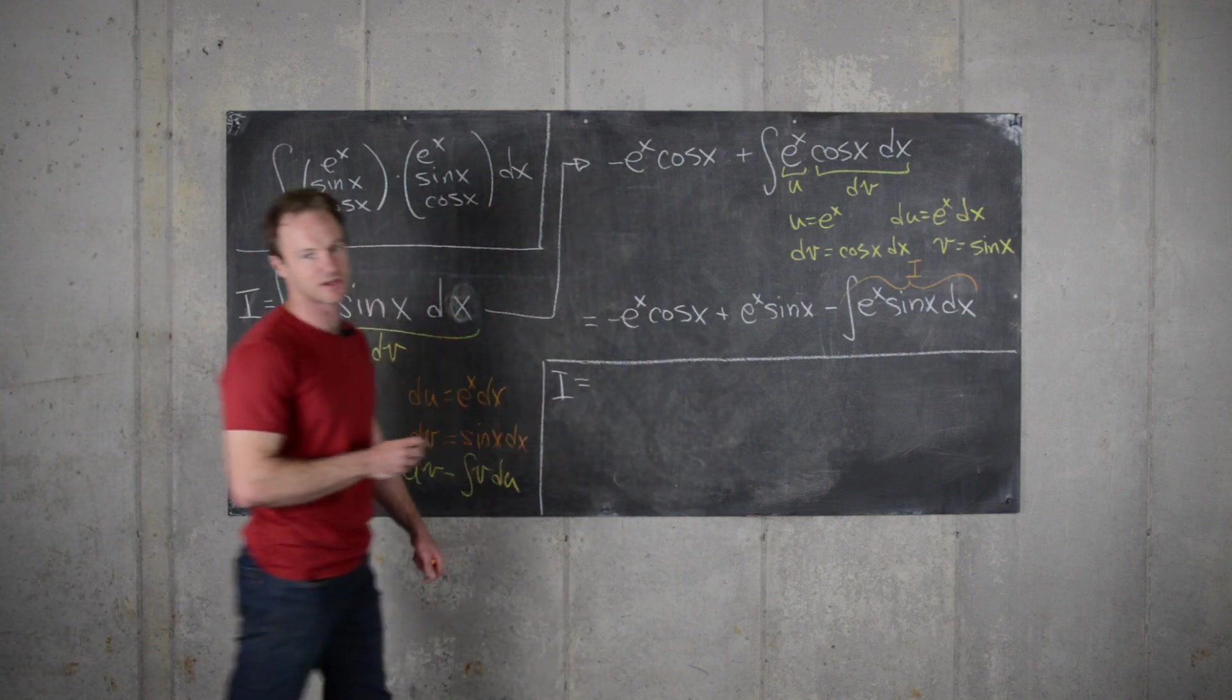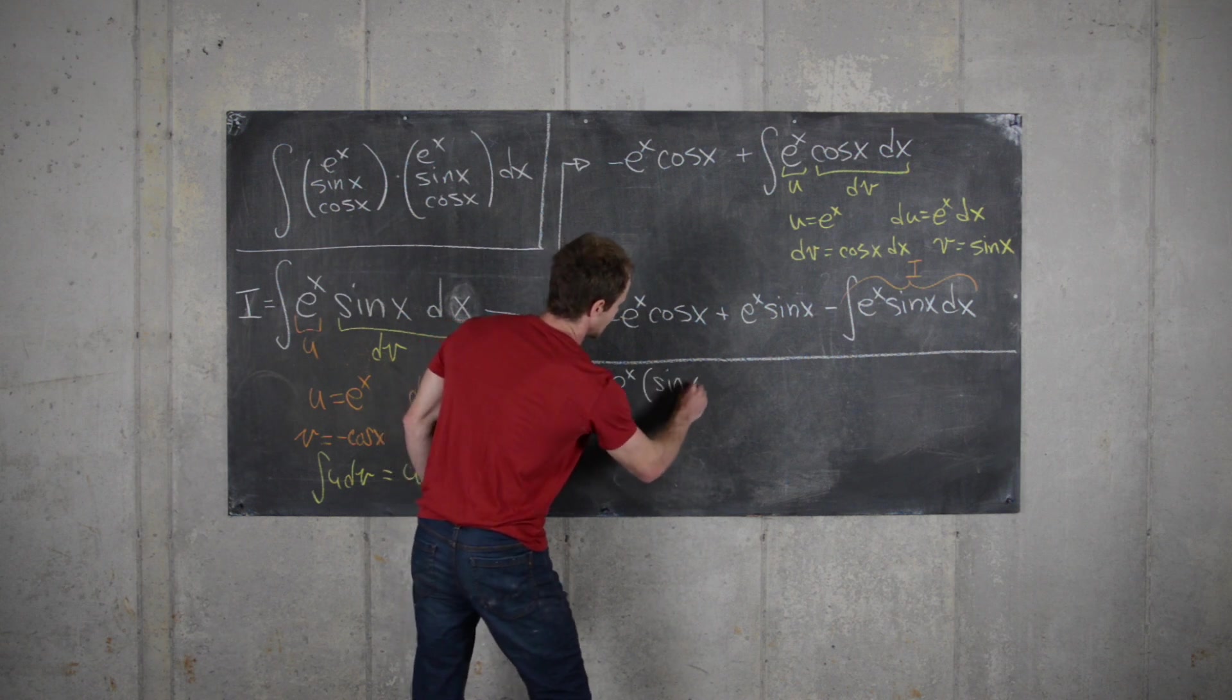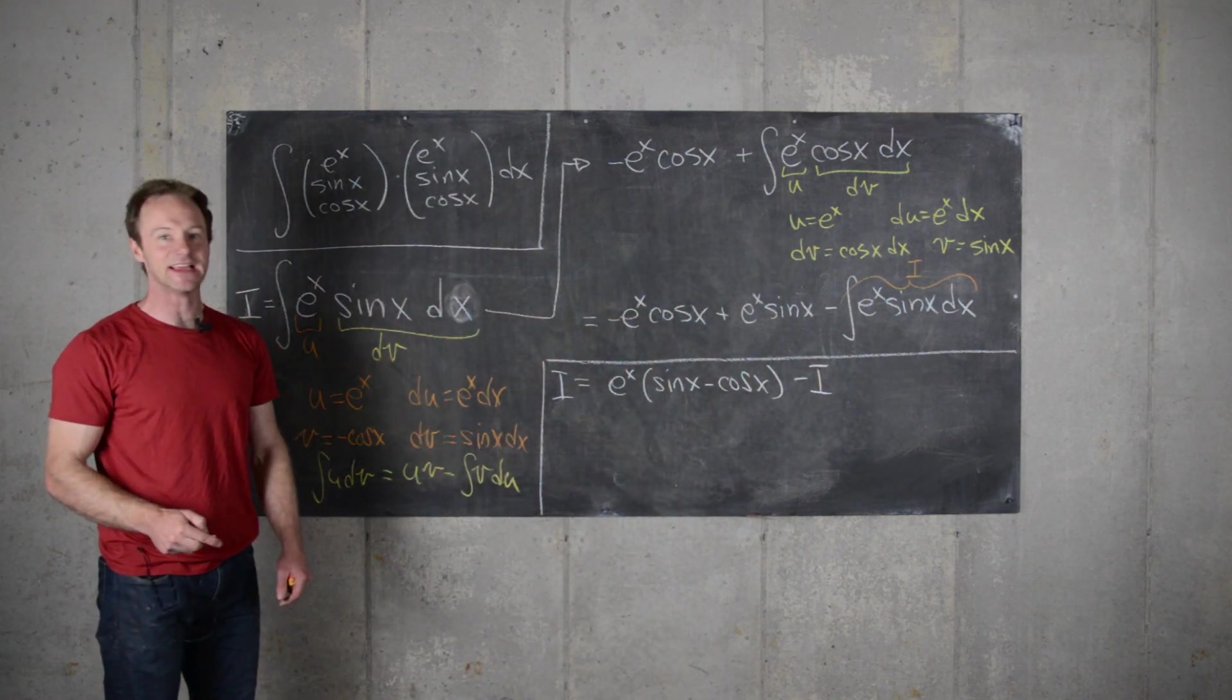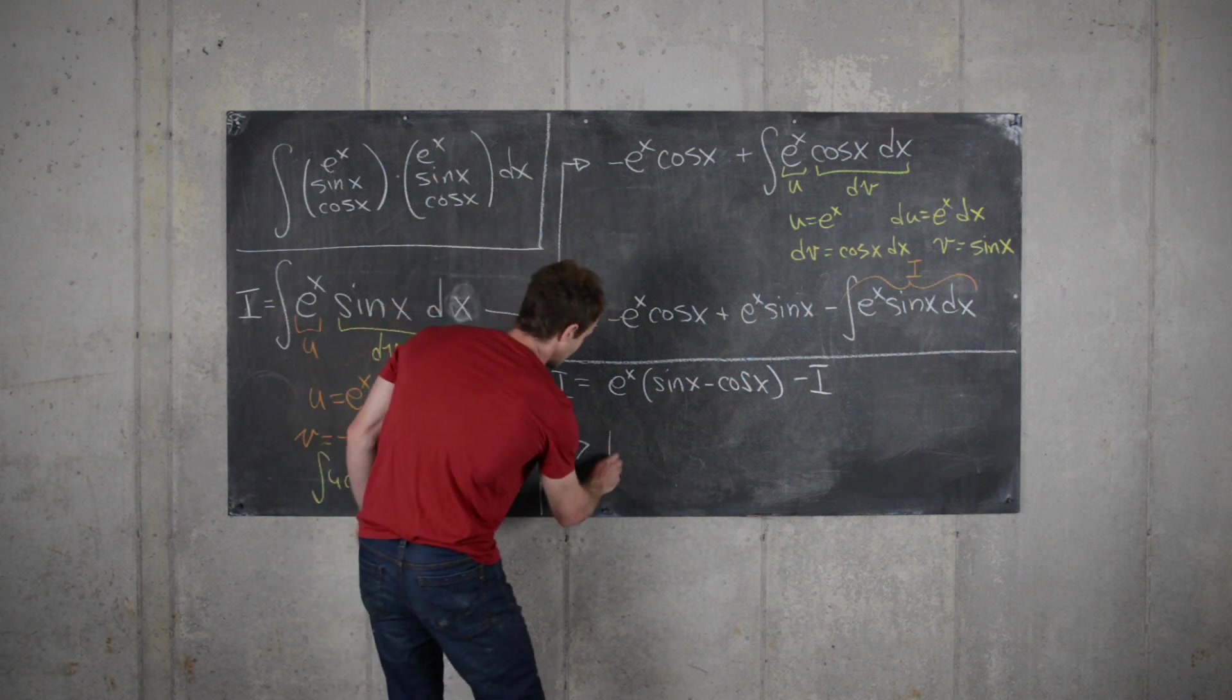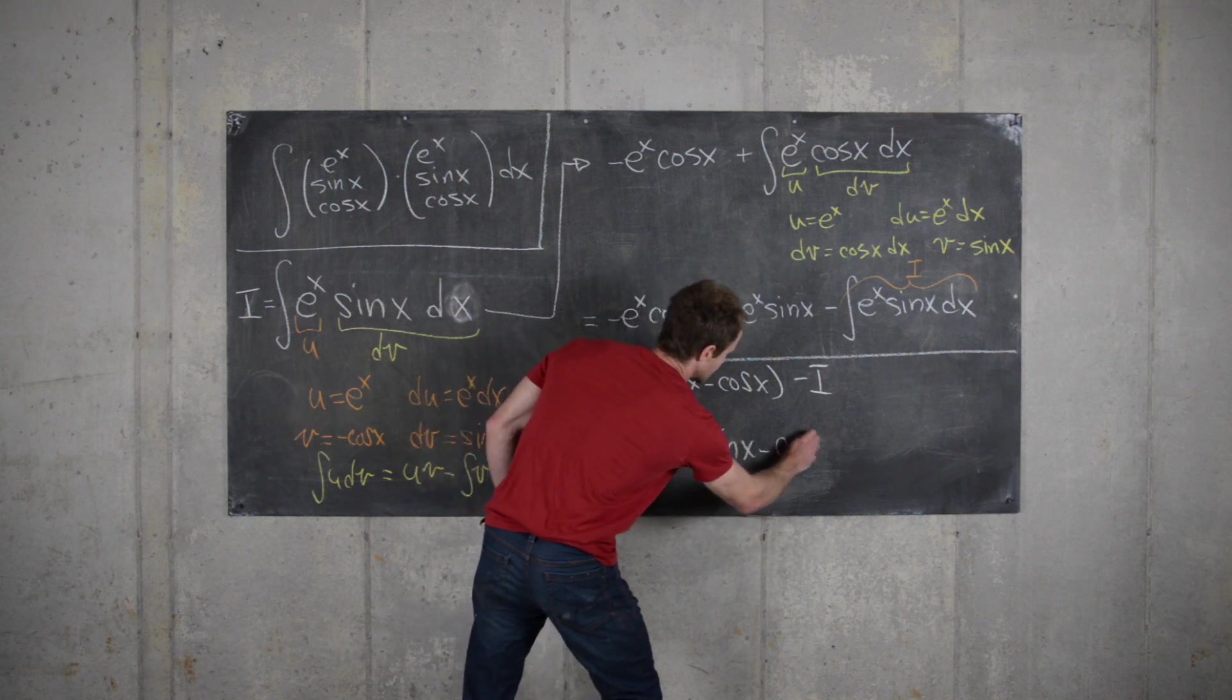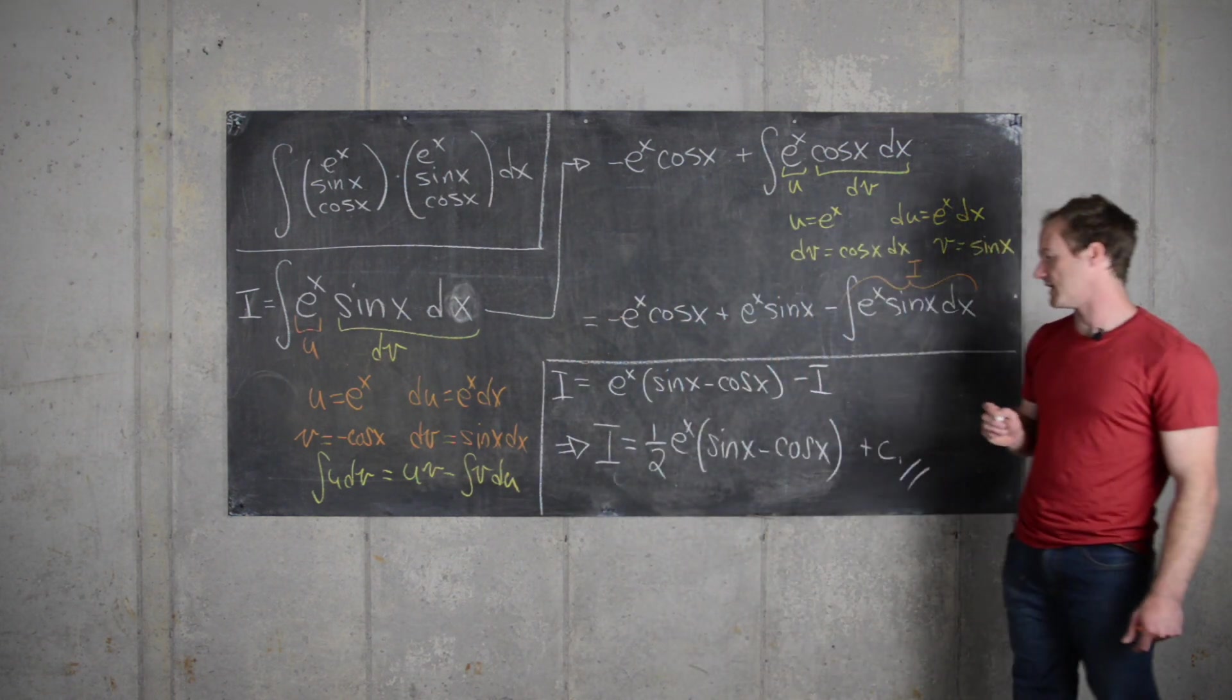Now, I'm going to switch this so I don't have a hanging minus sign. E to the x times sine x minus cosine x minus i. So there we've got it. We can easily solve this for i to give us i equals 1 half e to the x sine x minus cosine x. And then we can add our constant of integration for good measure. And that's the final answer.